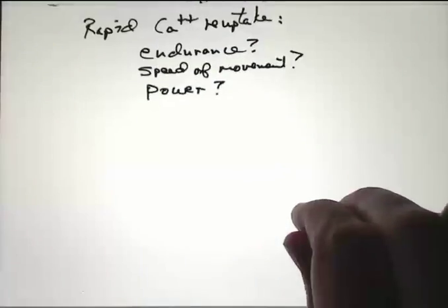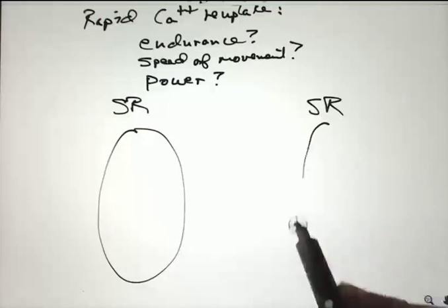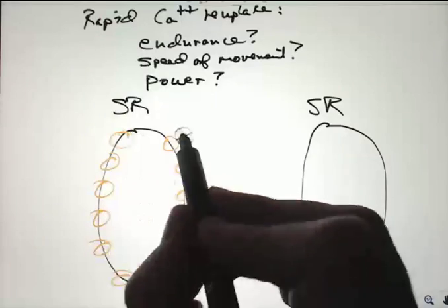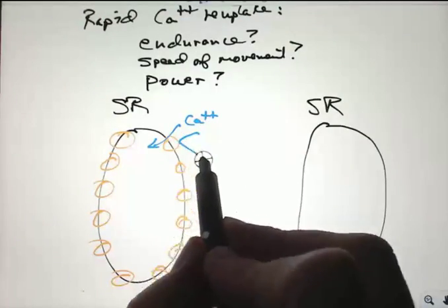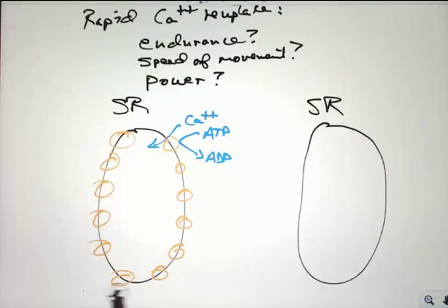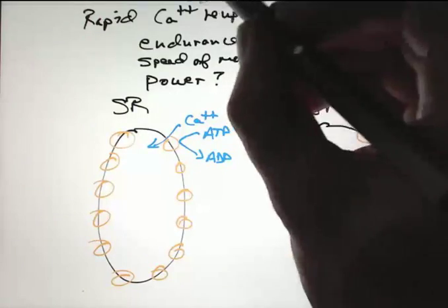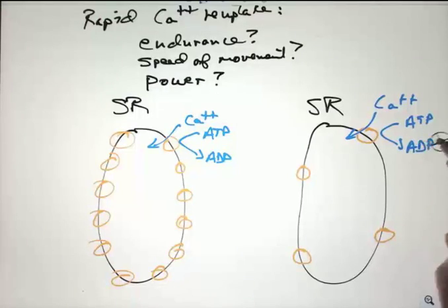So here's a question for you. What about rapid calcium reuptake? Does that help endurance, speed of movement, or power? So rapid calcium reuptake. Here's two pieces of sarcoplasmic reticulum. These are calcium pumps. So calcium pumps are what are taking in that calcium. So reuptake of calcium. So all around here, these would be moving. And here's one with low density of calcium pumps.